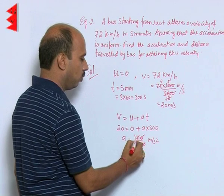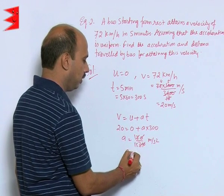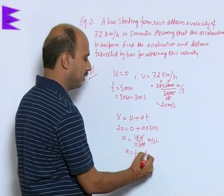So this 0, this is your 1 by 15, so a equals 1 by 15 meters per second squared.